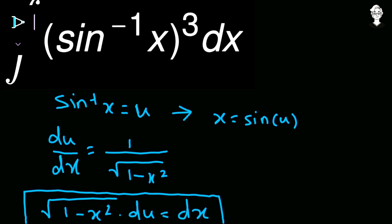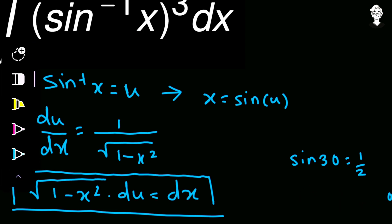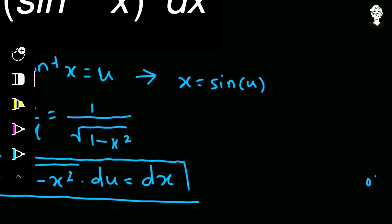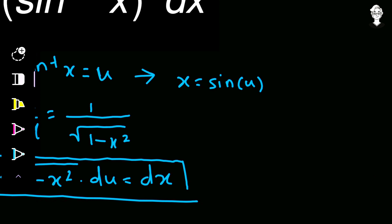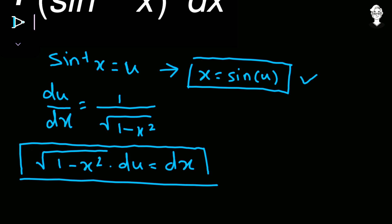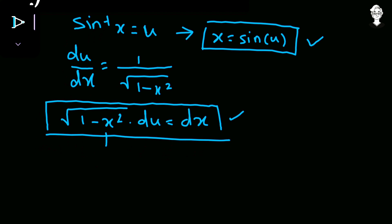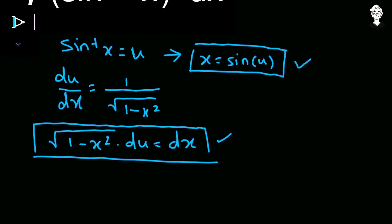For example, if sin of 30 degrees equals 1/2, then sin inverse of 1/2 gives the angle 30 degrees. Similarly, since sin inverse x equals u, we have x equals sin u. Substituting into dx, we get the square root of 1 minus sin²u, which equals cos²u, so the square root gives cos u. Therefore dx equals cos u du.